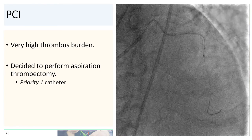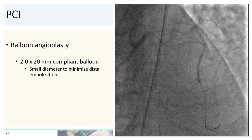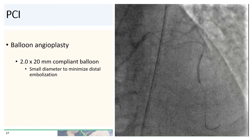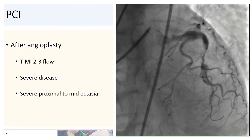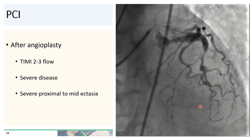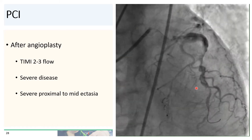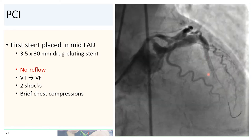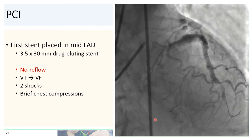Going back to our patient, who clearly had very high thrombus burden, we decided to perform aspiration thrombectomy using our Priority One aspiration thrombectomy catheter. After thrombectomy, we performed balloon angioplasty with a 2.0 by 20 mm compliant balloon, intentionally keeping the diameter relatively small to minimize distal embolization from thrombus being knocked loose. We were able to get TIMI 2 to 3 flow after balloon angioplasty. However, the entirety of the LAD is diseased — there is the aneurysm in the proximal LAD, but also ectasia and severe disease throughout the proximal and mid-LAD as well. We deployed a 3.5 by 30 mm stent in the mid-LAD, but unfortunately lost the distal LAD with no reflow, probably from thrombus embolization.